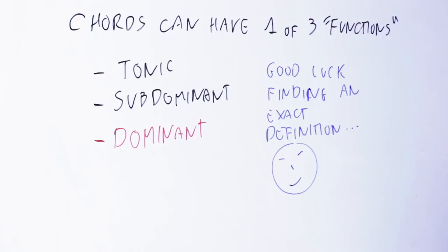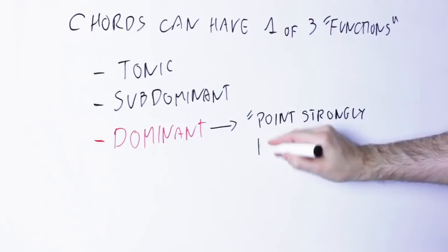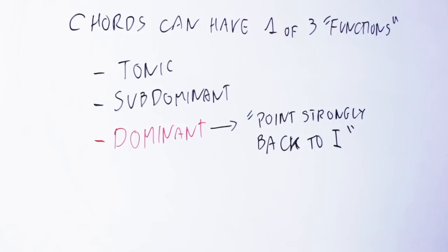But by and large, let's say that most people agree that dominant function chords are the chords that point strongly back to the first chord in the key. That is, if you want to go back to the first chord in the key, you put a dominant function chord just before it so that you have a lot of tension, and this tension resolves when we go back to the first chord.